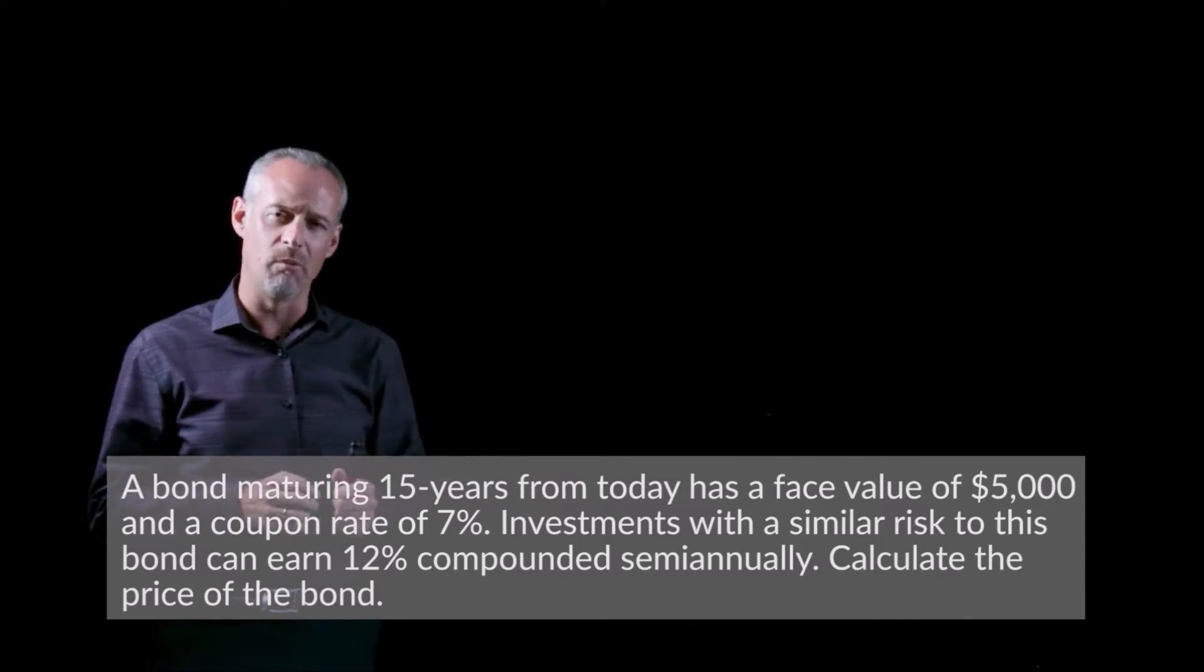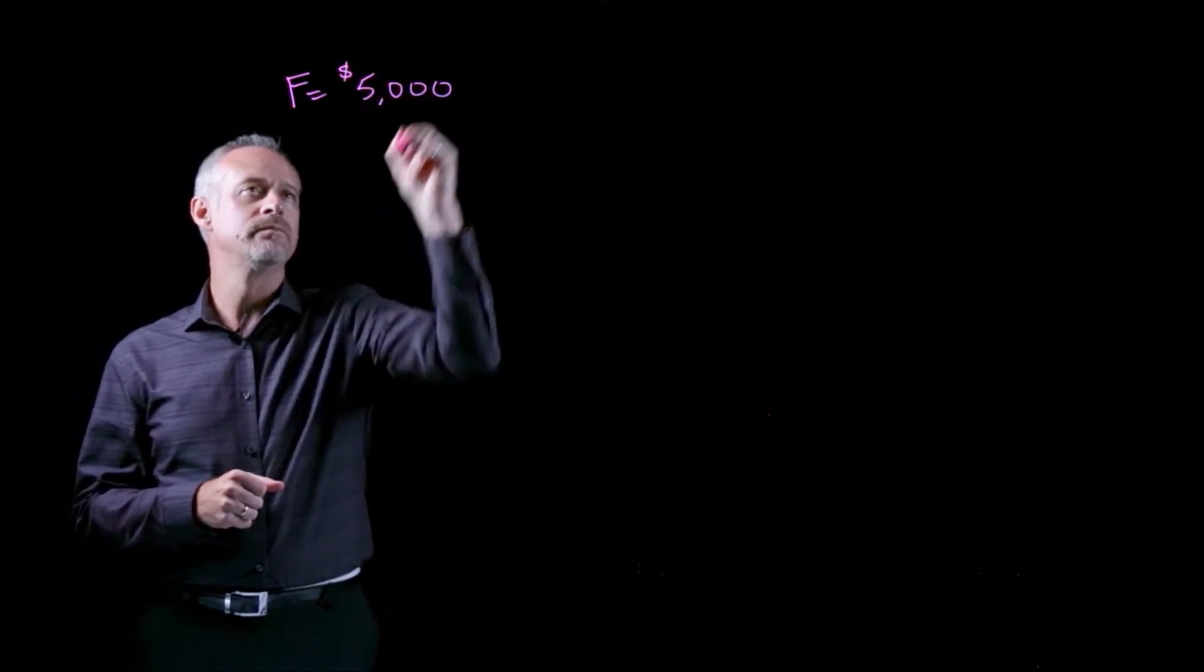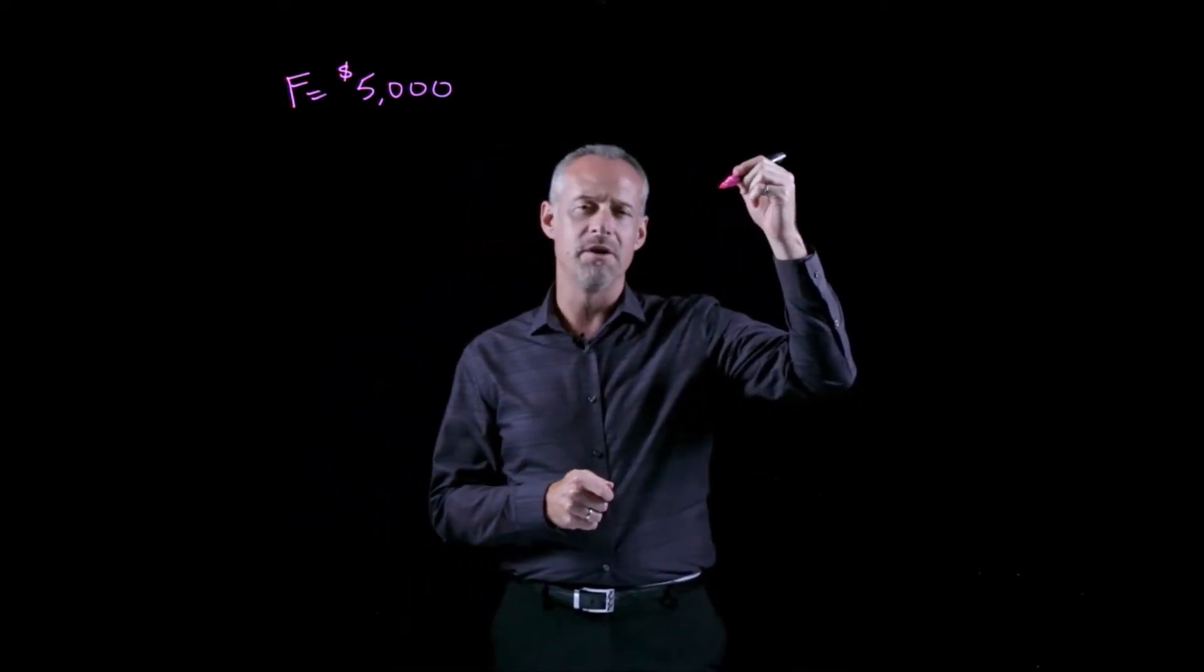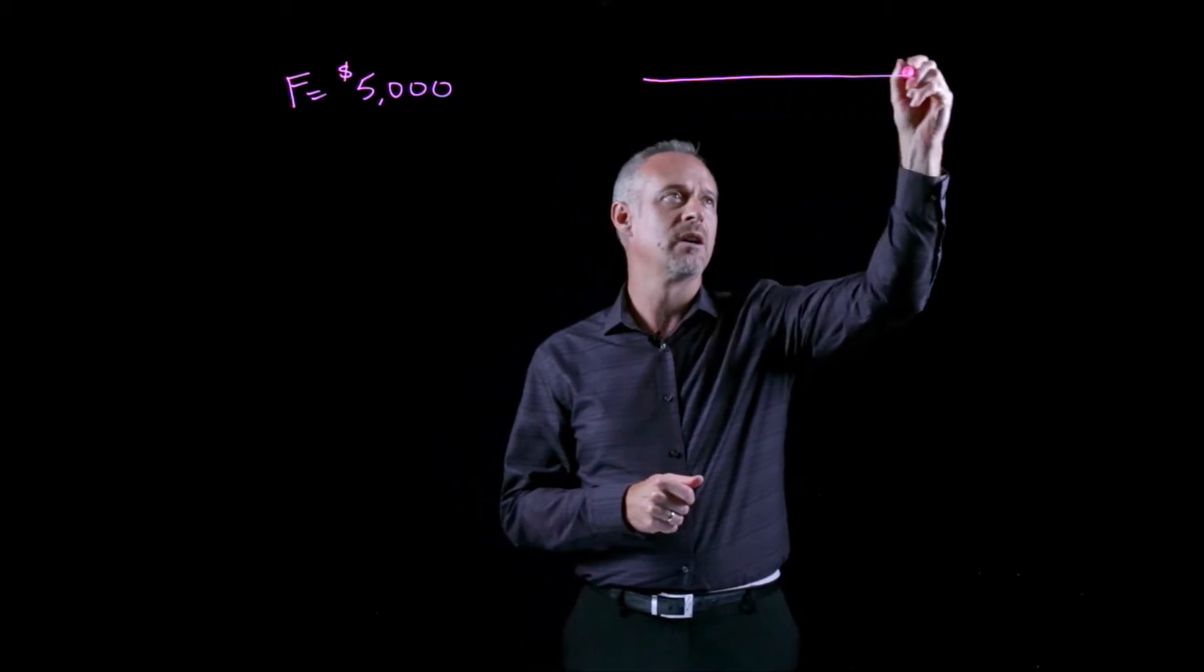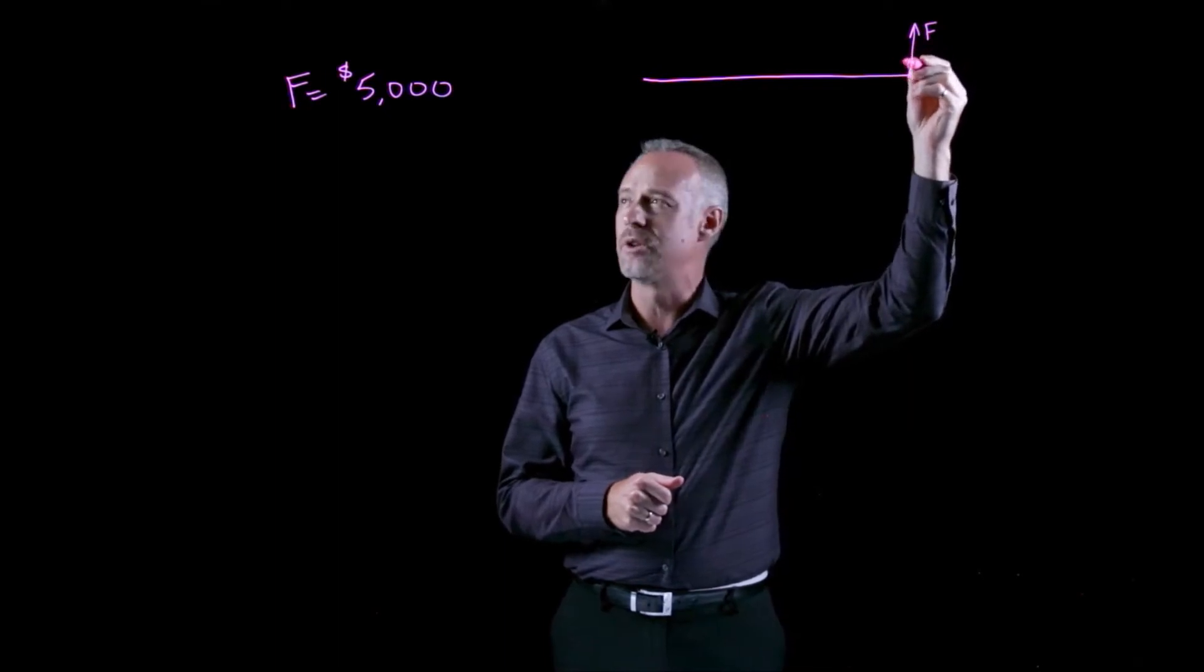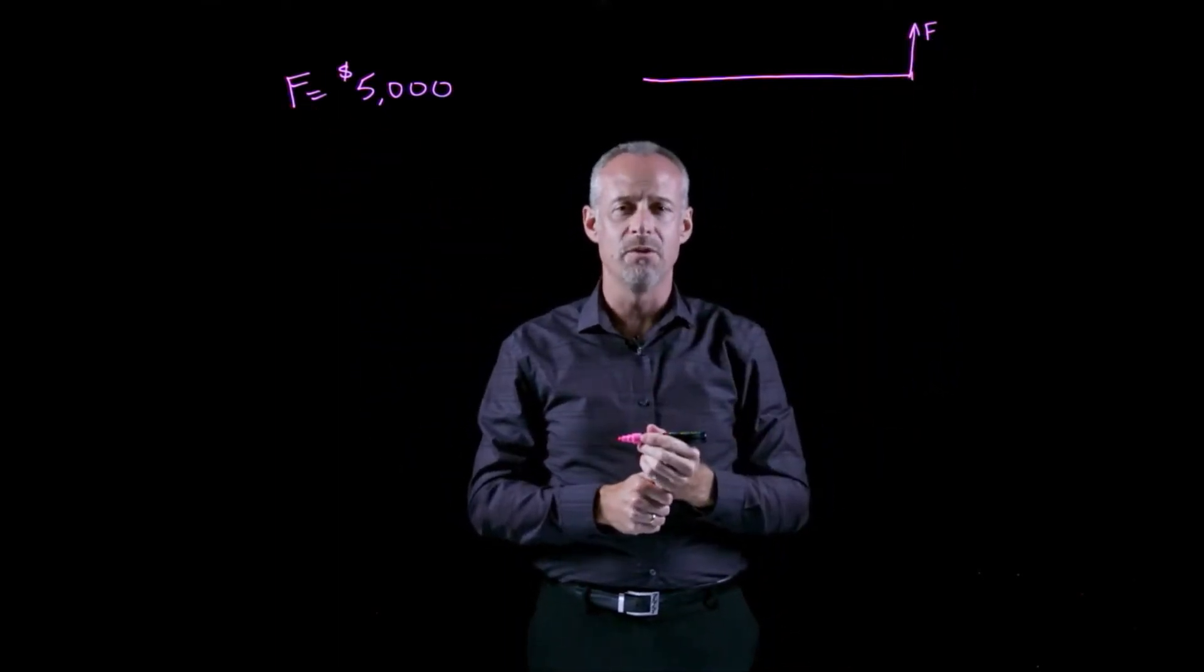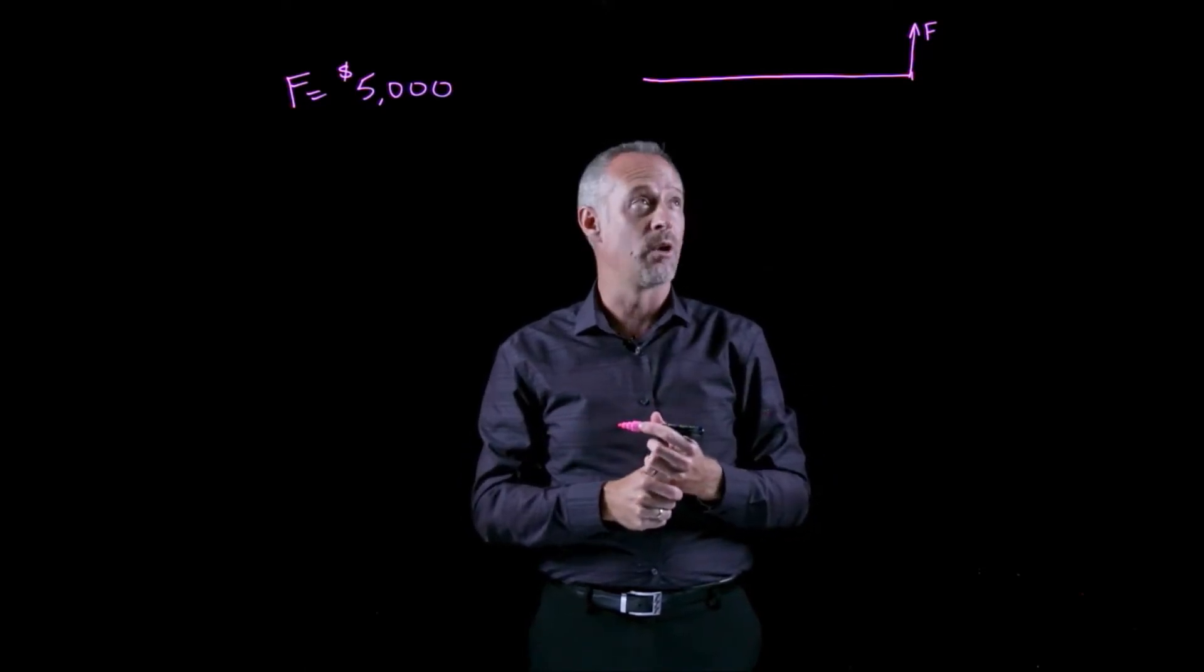In this particular problem, we're given the face value of this particular bond as being $5,000. Buying a bond is a bit like buying a cash flow diagram, we buy a future value. The term face value also corresponds to our F that we typically use in time value of money calculations. So it works out well. Face value is a future value.